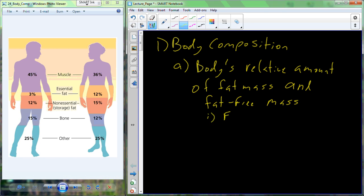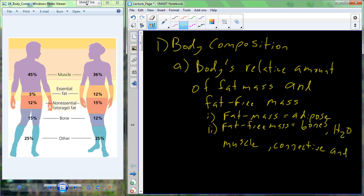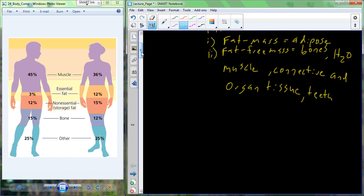Fat mass is going to include the adipose tissue, whereas the fat-free mass is the mass of the bones, water, muscle, and connective and organ tissue. It includes things like the teeth as well, other non-fat or non-adipose type tissue.